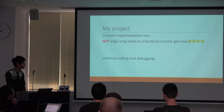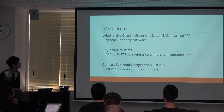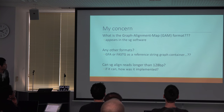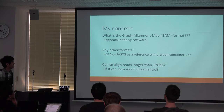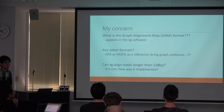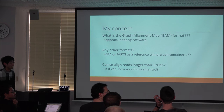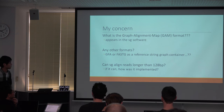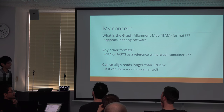My concern about graph genomes is about formats: what is the graph alignment map format in the VG software, and are there any other good formats? GFA is used and adopted by everyone, but what about fast GFA? My biggest concern is: can VG align reads as short as 128 base pairs, and how fast can it align those reads?